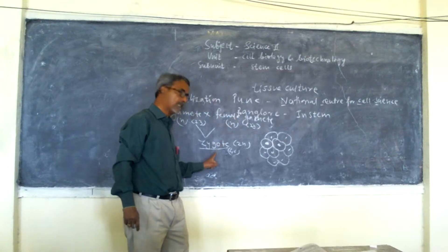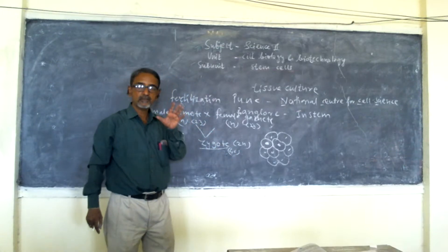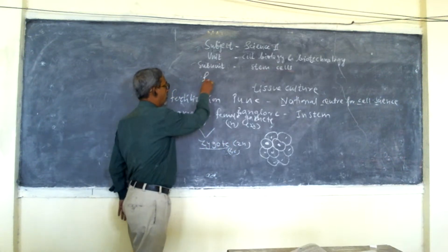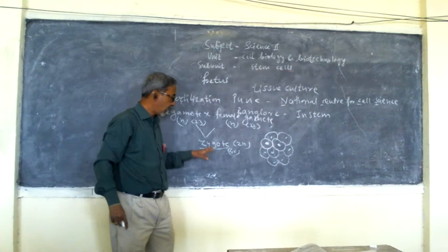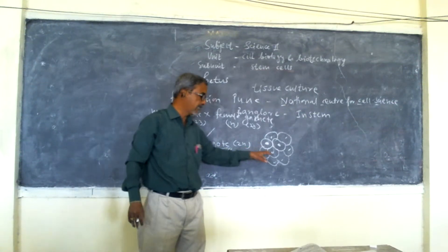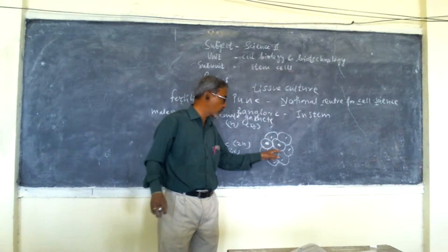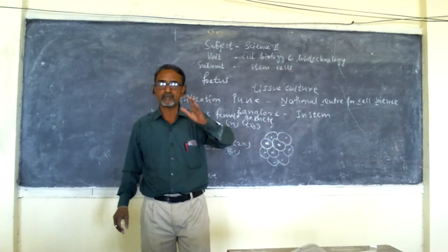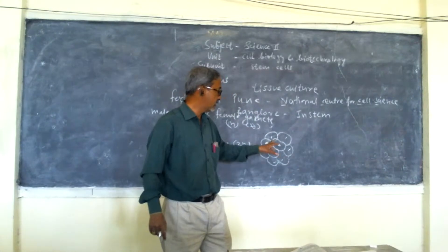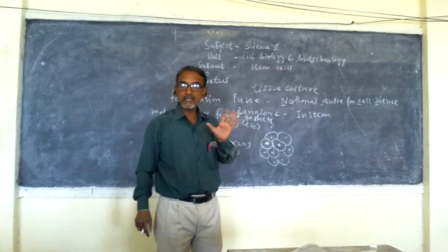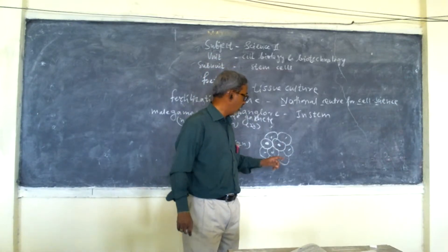The union of male and female gametes to form a zygote is called fertilization. An undifferentiated mass of cells is formed where all cells are alike — these cells are called stem cells. One of the functions of stem cells is the healing of wounds. Whenever you suffer a wound, the cells break, and healing takes place with the help of stem cells.